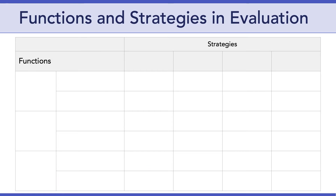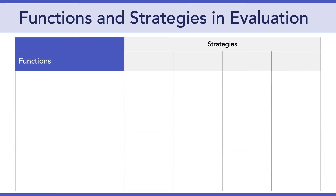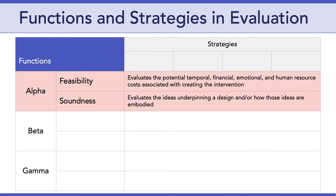Let's walk through McKinney and Reeves' matrix of functions and strategies of evaluation. We'll start with what they call the three stages of testing, adapted from software engineering: alpha, beta, and gamma testing. McKinney and Reeves have also specified six foci, or functions, of evaluation that loosely correspond to these three stages. The first stage is alpha testing, which takes place early in the DBR process and involves assessment of your design ideas. It typically focuses on two functions: feasibility and soundness. Evaluating feasibility means focusing on the potential temporal, financial, emotional, and human costs associated with creating your intervention. Evaluating soundness, on the other hand, has to do with examining the ideas underpinning your design and how those ideas are embodied.